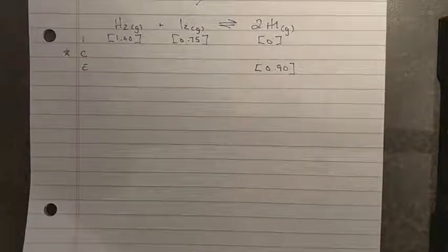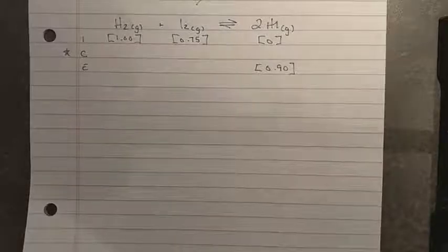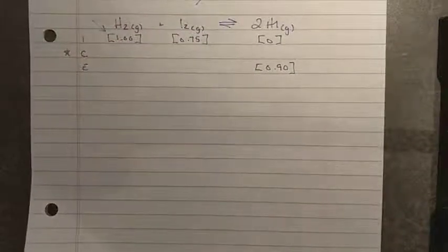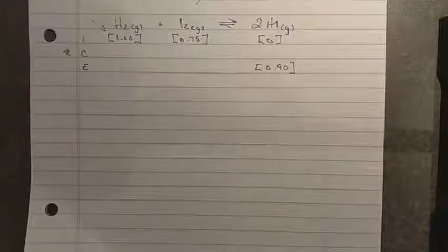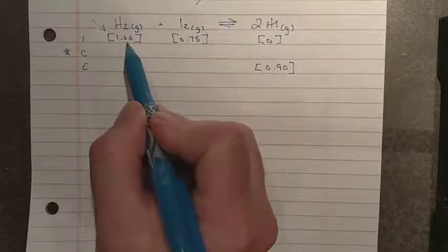One mole of hydrogen gas and 0.75 moles of iodine gas are placed into a one liter container. So remember, we do want to have concentrations in these particular problems, so we would need the ratio between moles and liters. One mole of hydrogen gas in a one liter vessel is a one mole per liter concentration, so that's where I get this.